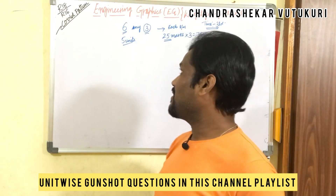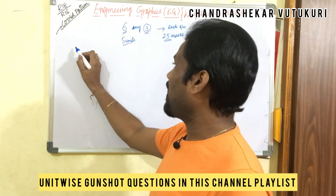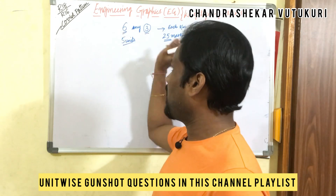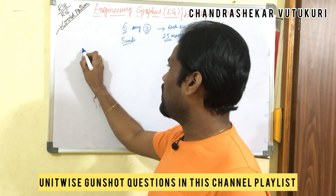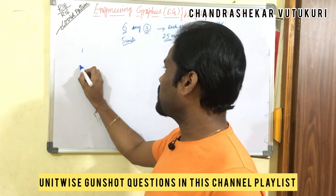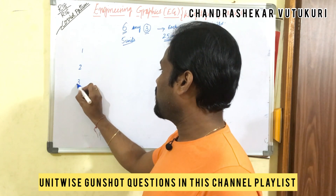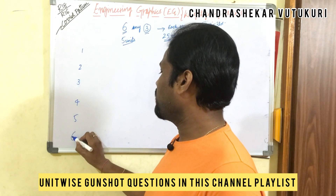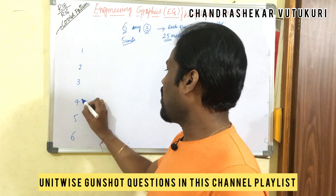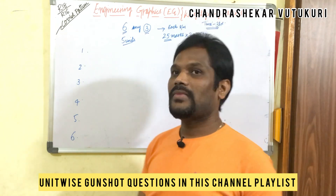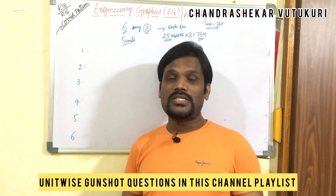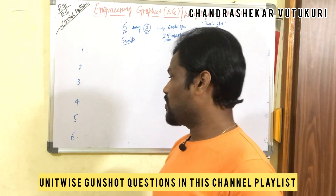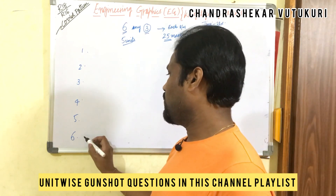Now let's look at the paper pattern. As I told you, six questions for 75 marks and you answer three. I'm going to highlight questions one through six, covering which unit they come from, how many marks you get, and what types of questions will be asked in each unit.